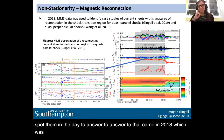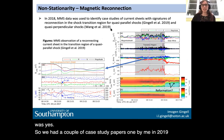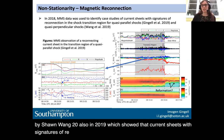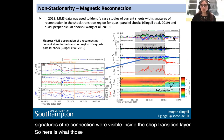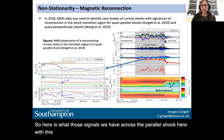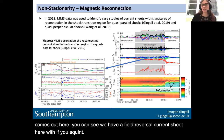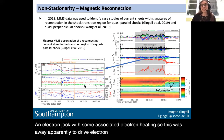We had a couple of case studies — one by me in 2019, another by Shan Wang also in 2019 — which showed that current sheets with signatures of reconnection were visible inside the shock transition. Here is one example: a quasi-parallel shock with this transition region just behind the shock ramp, showing a field reversal current with an electron jet and associated electron heating. This was apparently a way to drive electron acceleration inside the shock transition layer, or slightly downstream of it in this case.